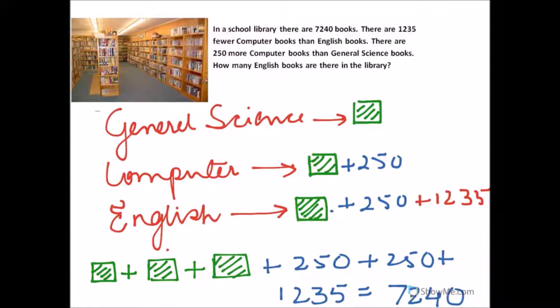Welcome to the daily challenge. The question goes: in a school library there are 7,240 books. There are 1,235 fewer computer books than English books. There are 250 more computer books than general science books. How many English books are there in the library?